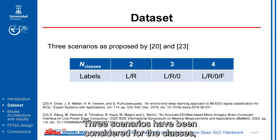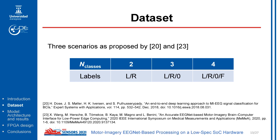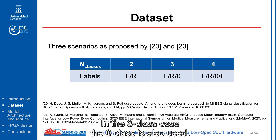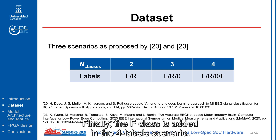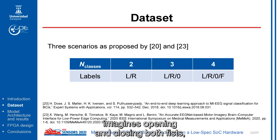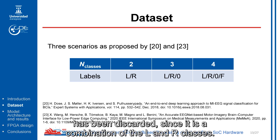Three scenarios have been considered for the classes, the same proposed in works 20 and 25. For the two-class scenario, only classes L and R are used. In the three-class case, the zero class is also used. Finally, the F class is added in the four-class scenario. Please note that the B class — when the subject imagines opening and closing both fists — has been discarded, as it is a combination of the L and R classes.